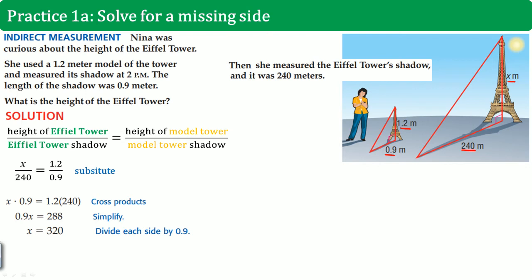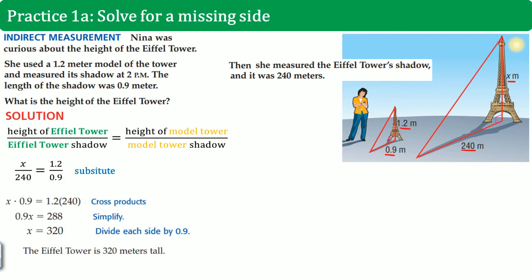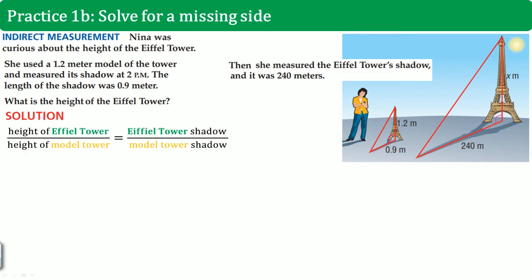There's actually another way for us to do this. Here's the problem again, but they set up the ratio a little bit differently. Look at the way I color code it. Before, I did the green on one side and the orange on the other side. The height of the Eiffel Tower divided by the Eiffel Tower shadow. This time, I did it. The height of the Eiffel Tower divided by the height of the model tower. That equals to the Eiffel Tower shadow equals to the model tower shadow. That's what it looks like. The height was X. The height of the model is 1.2. That's going to be equal to the shadow of the real one, 240 divided by the model shadow at 0.9.